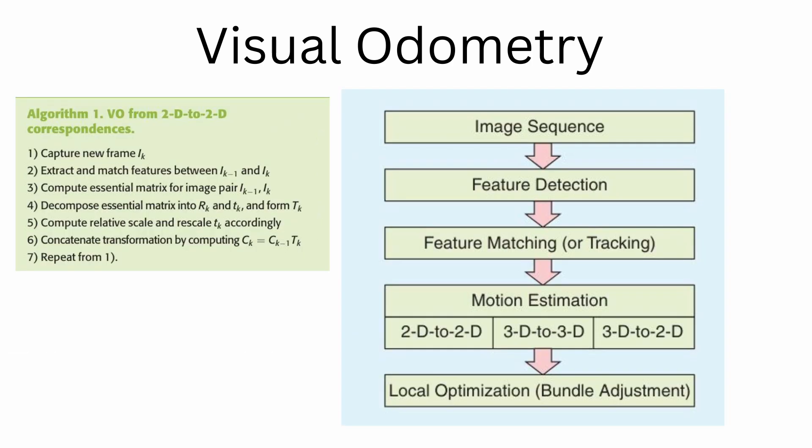Looking at the different components, first you have feature detection. So for every new image I of K, this step consists of detecting 2D features. There are various methods like SIFT, SURF, or ORB to extract features from images. The next step is feature matching or tracking. For every new image I of K, this step either matches 2D features obtained from step one, or tracks what we got prior to this iteration.